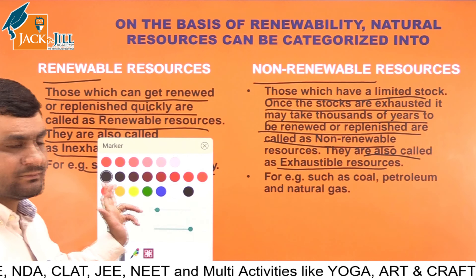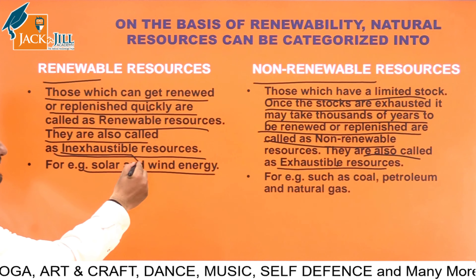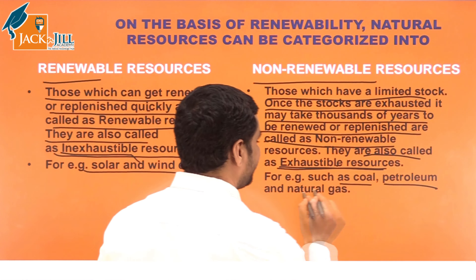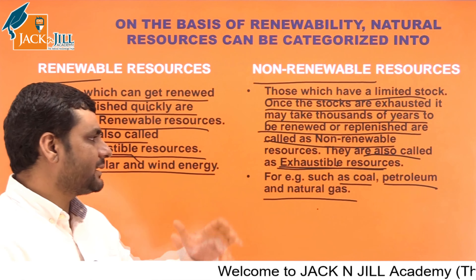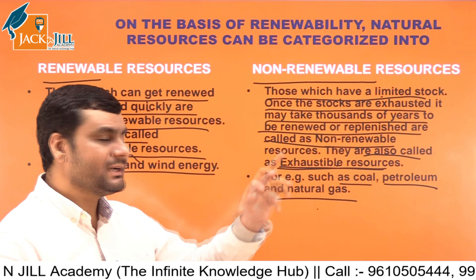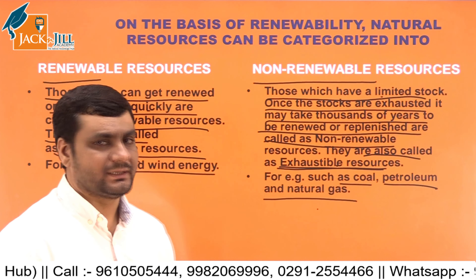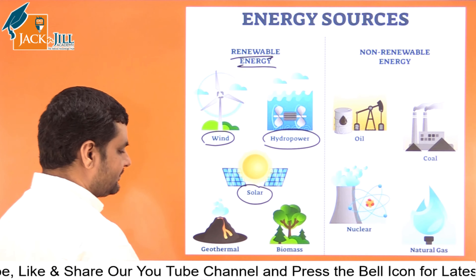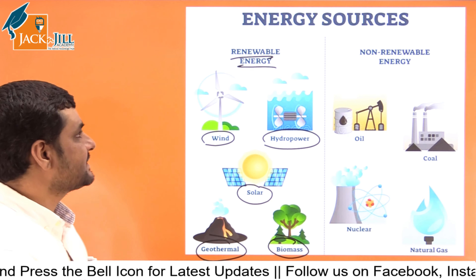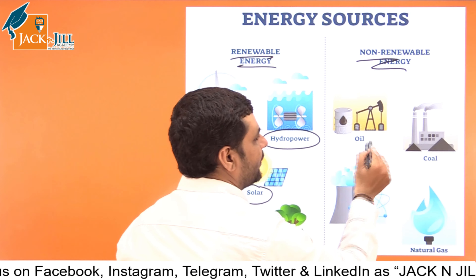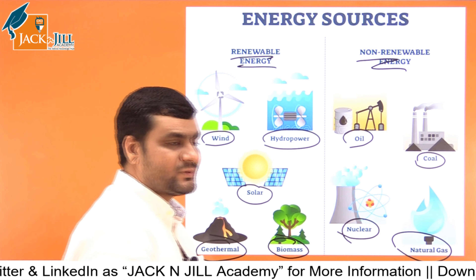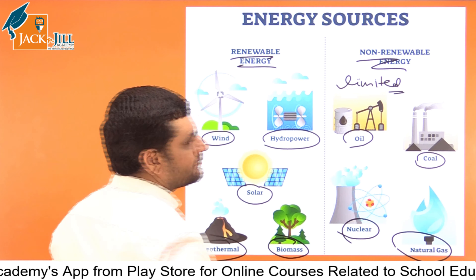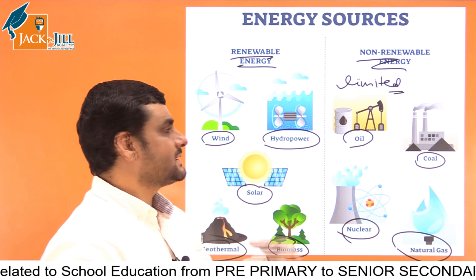Non-renewable resources are also called exhaustible resources — meaning they can be exhausted. Inexhaustible means not exhaustible; exhaustible means they can run out. Examples of non-renewable resources: coal, petroleum, natural gas — these exist on earth in limited quantities. Examples of renewable resources: wind energy, hydropower, solar energy, geothermal energy, biomass. Non-renewable examples: oil, coal, nuclear energy, natural gas — these are limited and take thousands of years to form.